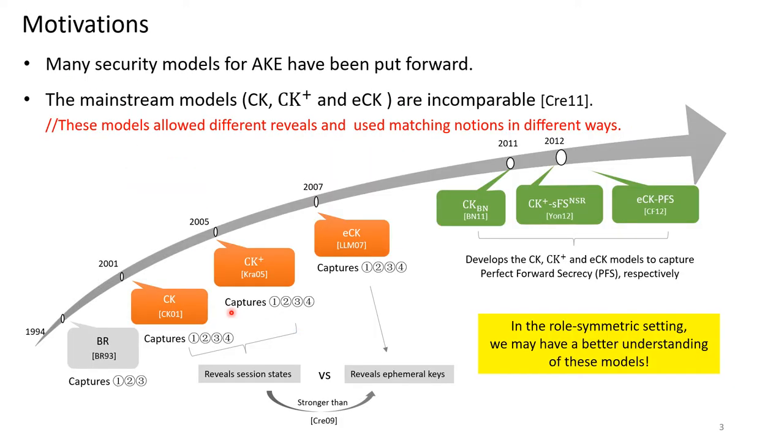In the literature, many security models for AKE have been put forward. The first one is the BR model. It captures the first three attacks. After it, the CK, CK+, and ECK models were proposed to capture the fourth condition. There also exist models improving them to capture perfect forward security. Notice that the CK and CK+ models capture session state review queries, while the ECK model captures ephemeral key reviews. They are different. To date, a few works compare these models. The only ones stated that the CK, CK+, and ECK models are incomparable.